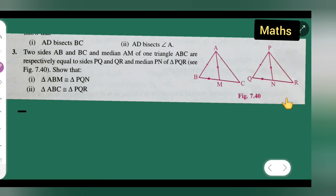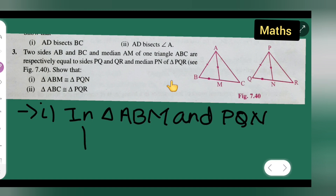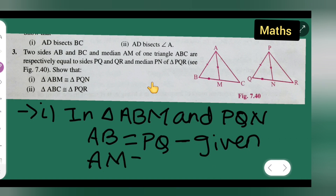First, I'm going to prove Part 1 — that is, in triangle ABM and triangle PQN. From the question, it is given that AB is equal to PQ. So I will write: AB = PQ. That is the first given statement. Next, AM is equal to PN, which is also given.